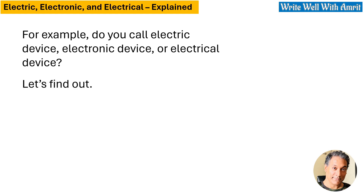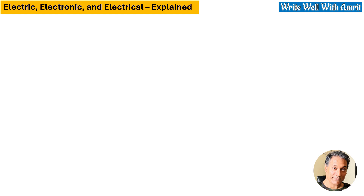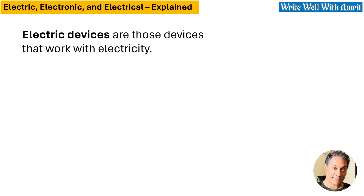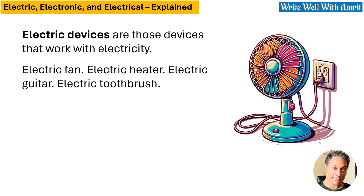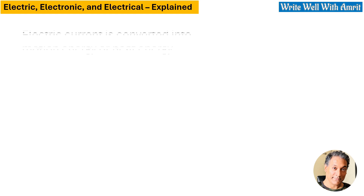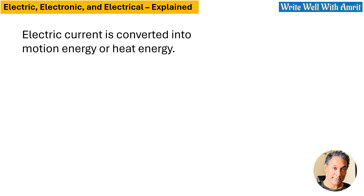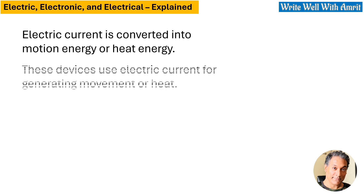Electric devices are those devices that work with electricity — electric fan, electric heater, electric guitar, electric toothbrush. Electric current is converted into motion energy or heat energy. These devices use electric current for generating movement or heat.